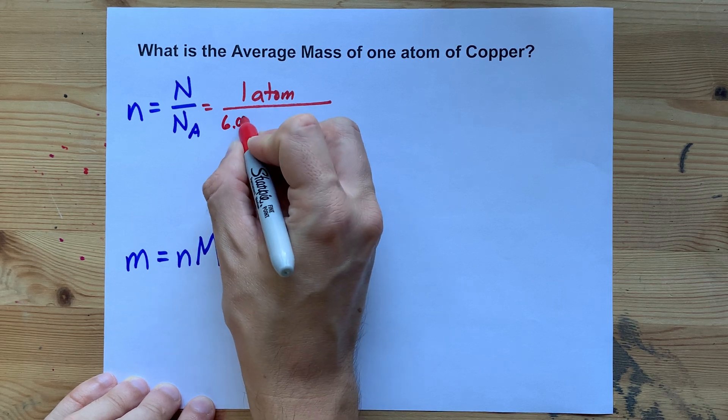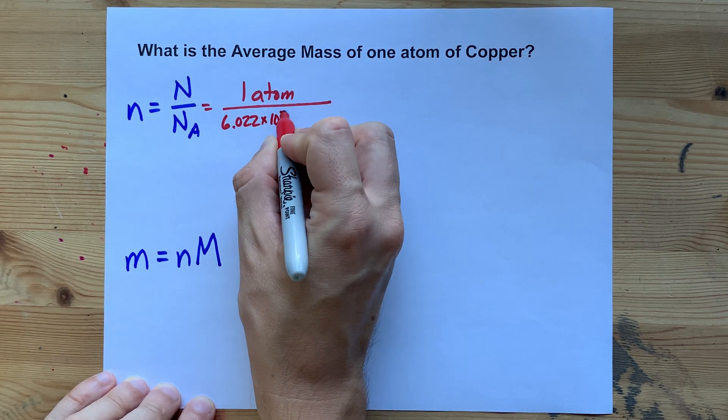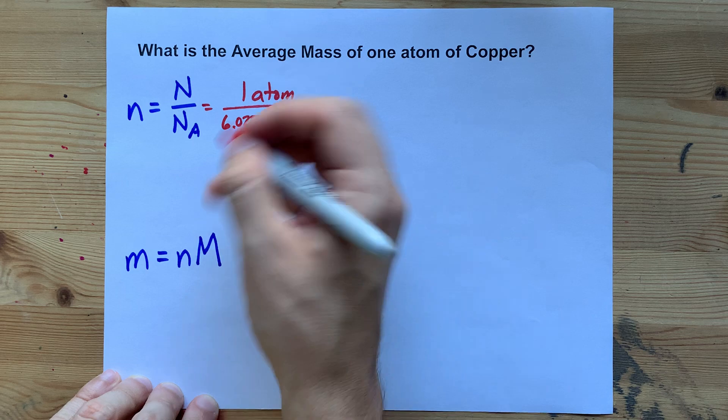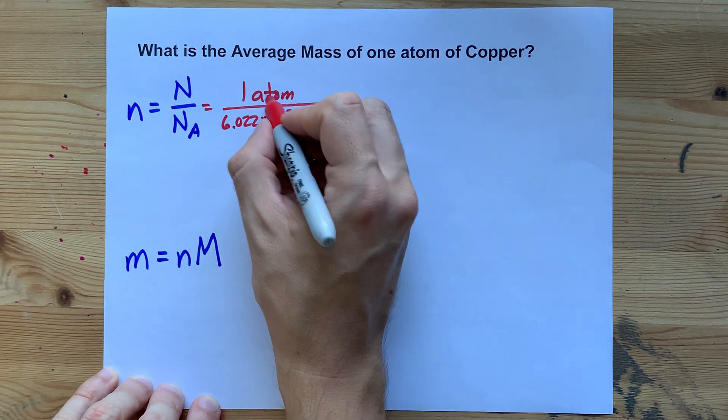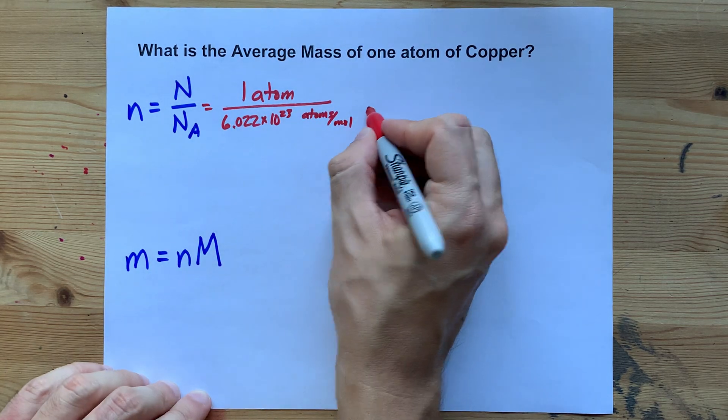Avogadro's number is 6.022 times 10 to the 23. The units here, because we're counting atoms, is atoms per mole. You'll notice the unit of atoms cancels.